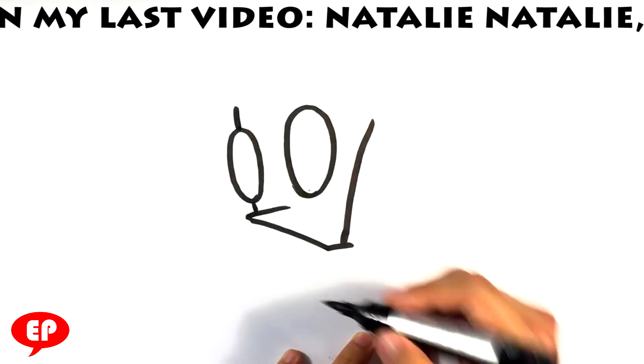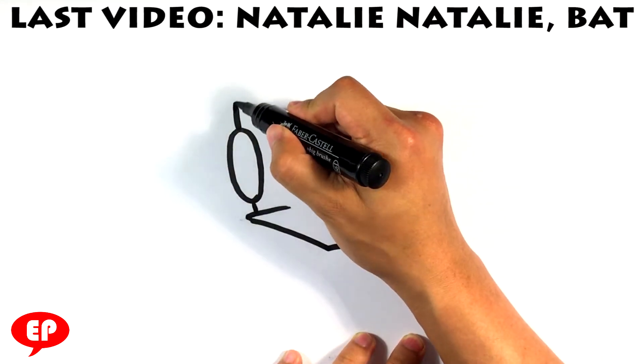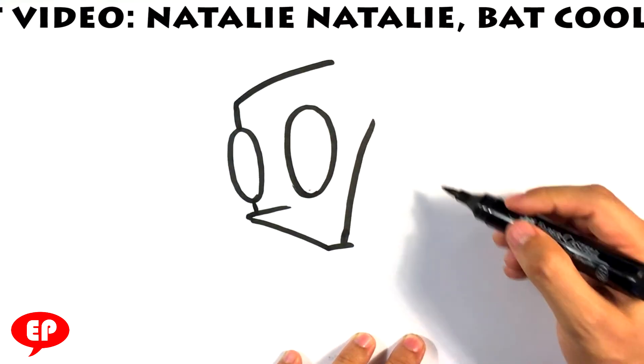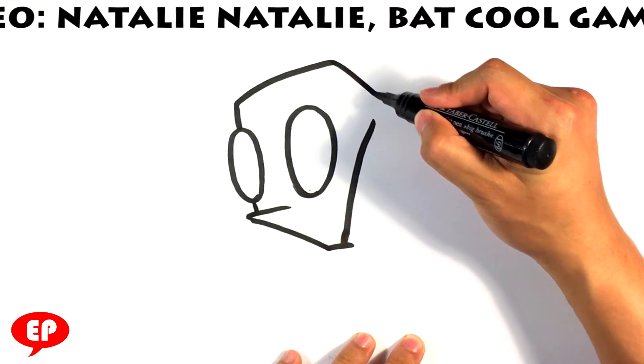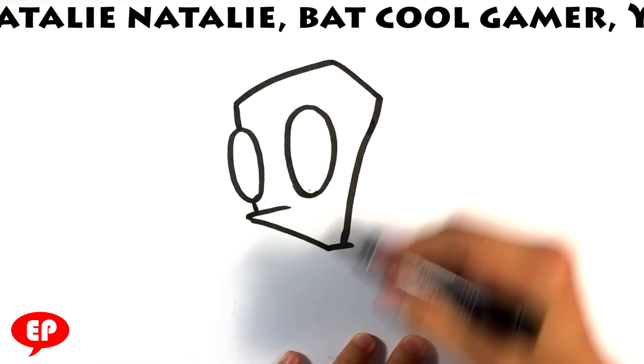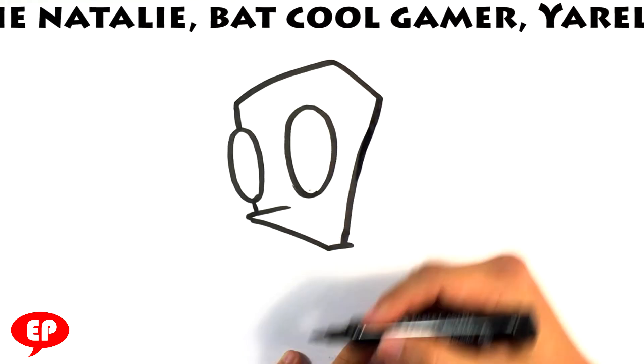The front of the forehead. The top of the head is pretty much flat. Pulled back into the back part of the head and connect it here. Try to make that straighter.